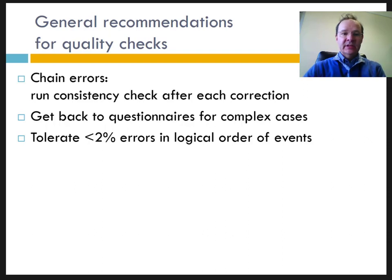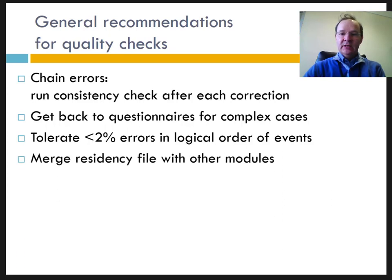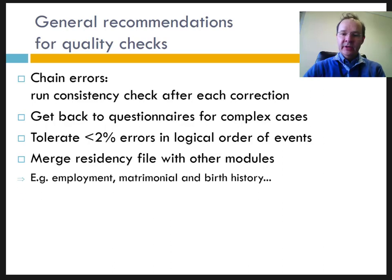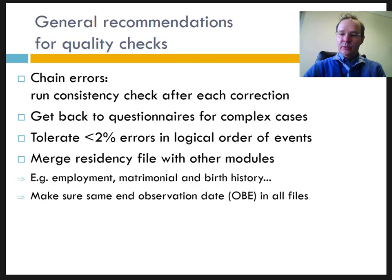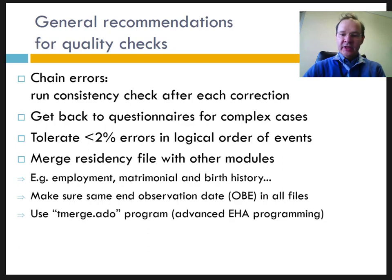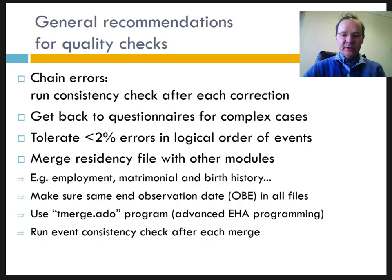Once the event consistency matrix is checked and errors corrected, other events can be merged with the basic core residency file — such as employment history, matrimonial history, birth history, etc. Before merging, make sure that all files end with an OBE, preferably with the same end-of-observation date. To merge these files, you will need to use a special program named tMerge. You should run a consistency check after each merging. The detailed procedures are found in our longitudinal data management manual, attached to our BMC research note.